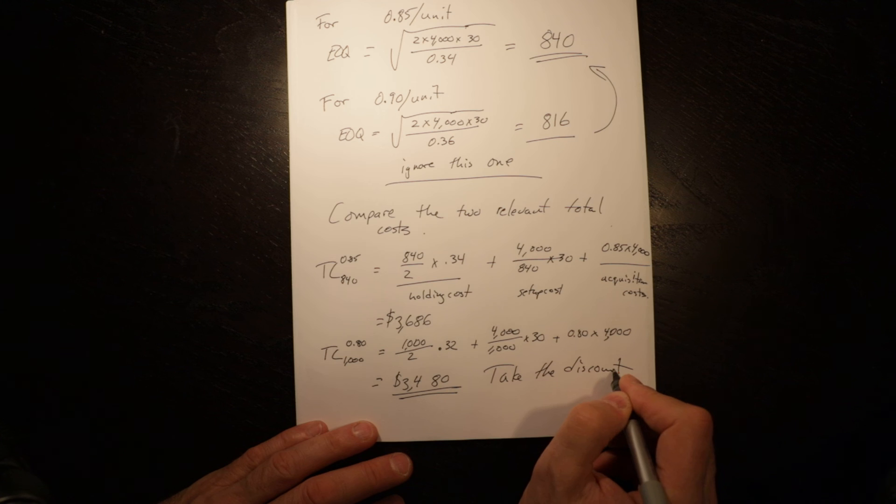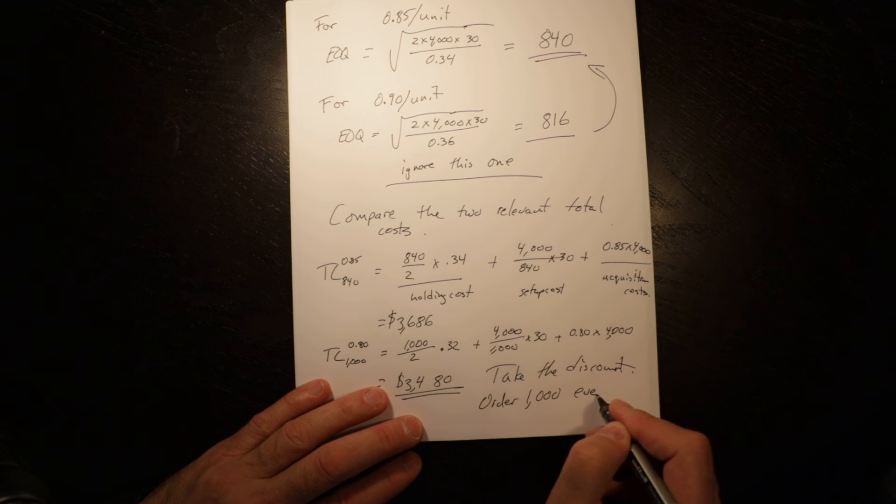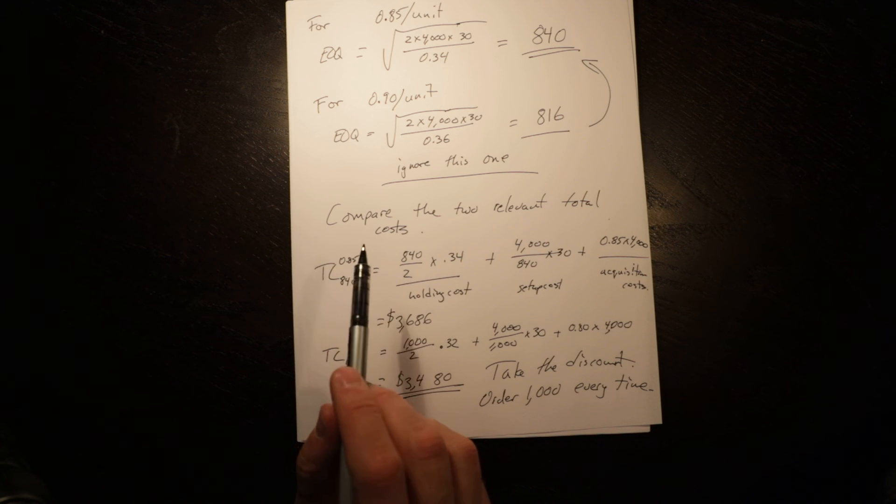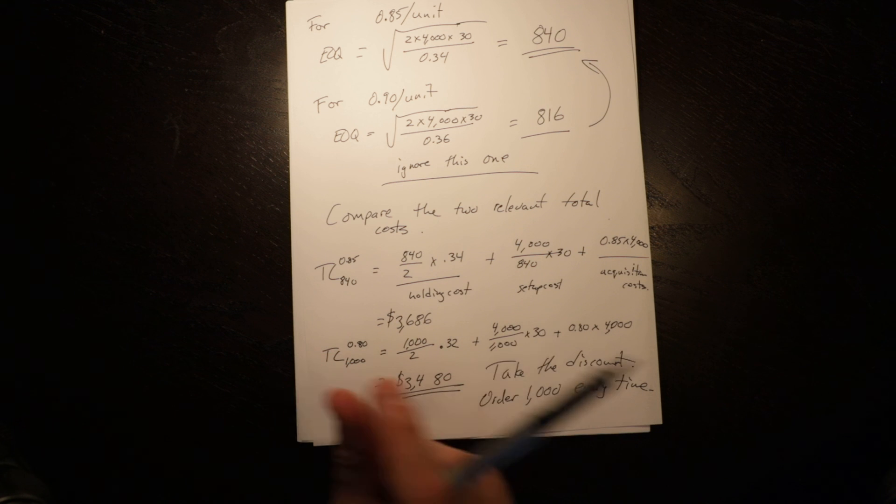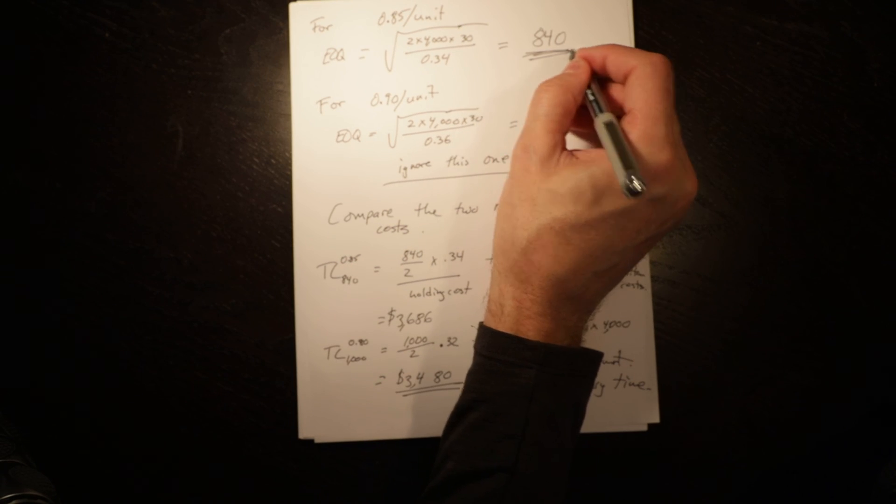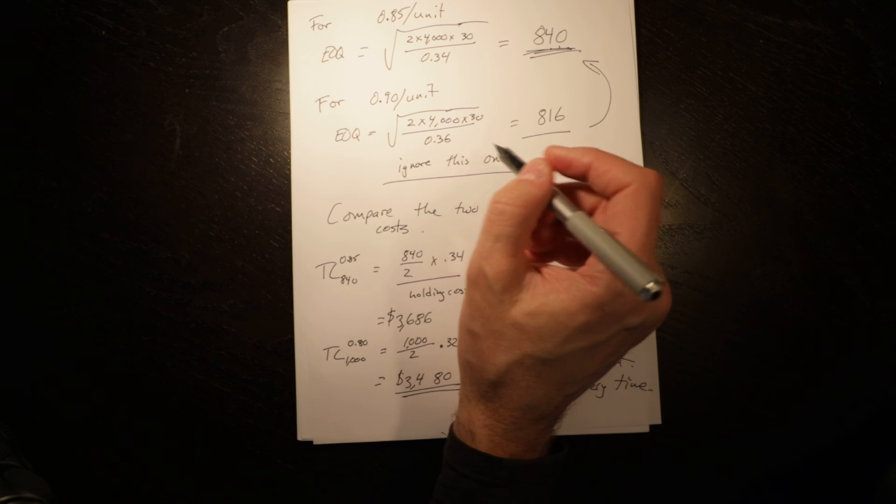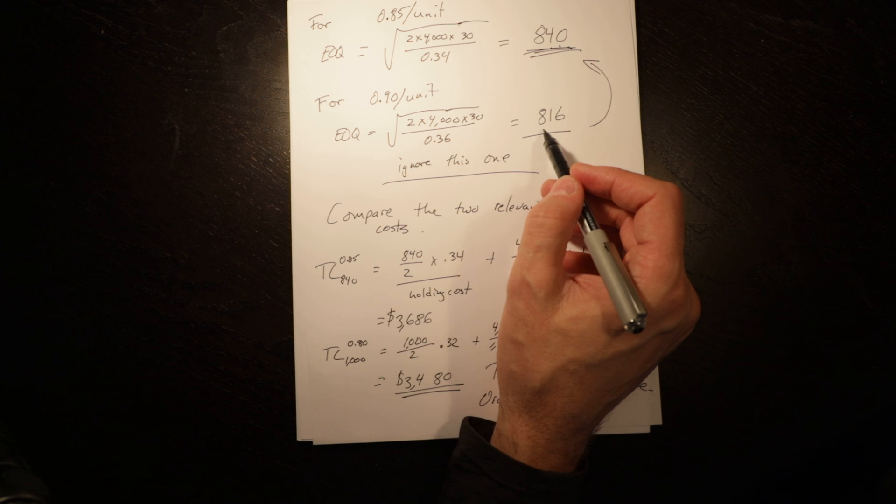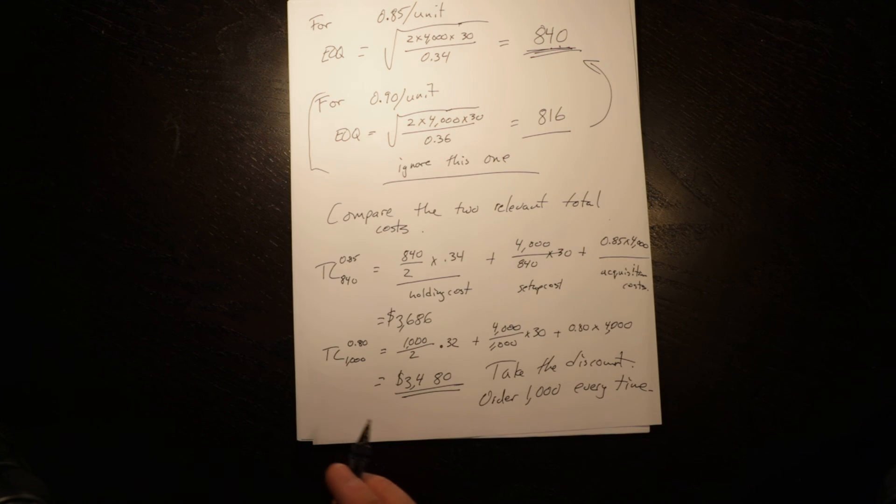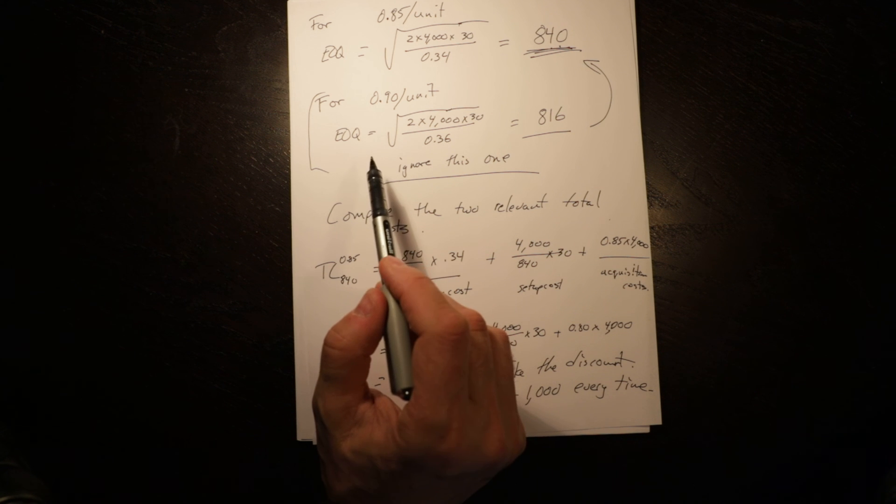Take the discount—order a thousand every time. In this case, what we do for the quantity discount model is we do an EOQ for each space of the discount. Look at if the economic ordered quantity is within the range of the quantity discount; you would order that amount. For 90 cents, the economic order quantity was big enough that you would get the 85 cent discount, so you could ignore that one.